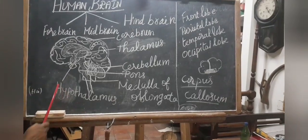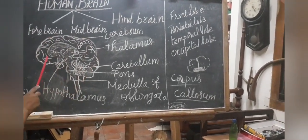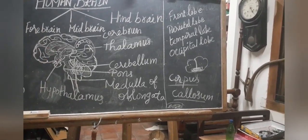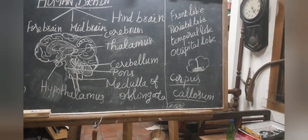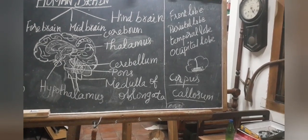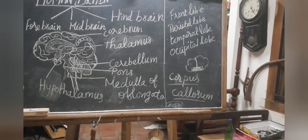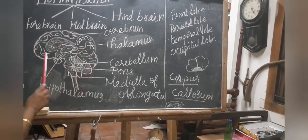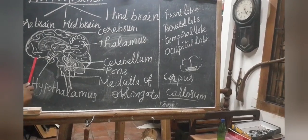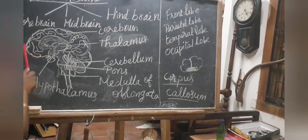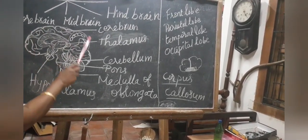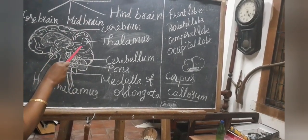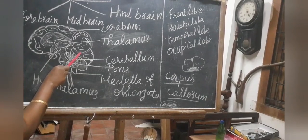The cerebrum is important for thinking, intelligence, consciousness, memory, imagination, reasoning and willpower. The outer portion of the cerebrum is gray matter called the cerebral cortex, and the inner portion is white matter called the cerebral medulla.